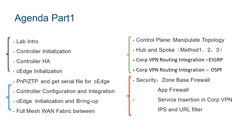After understanding our experimental architecture, the first thing to do is initialisation of our controller. Our controller integrates through certificates and communication over the underlay, allowing us to integrate them together. This is our first hands-on experimental session.